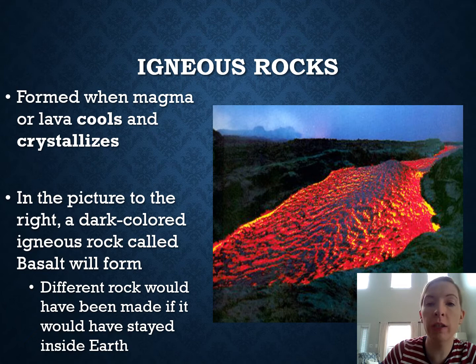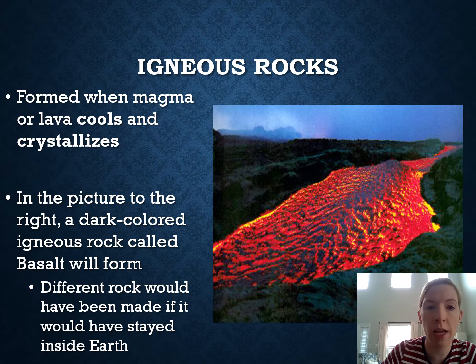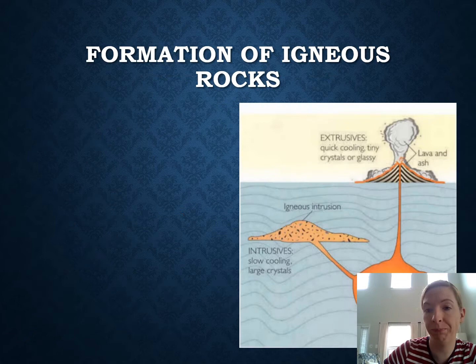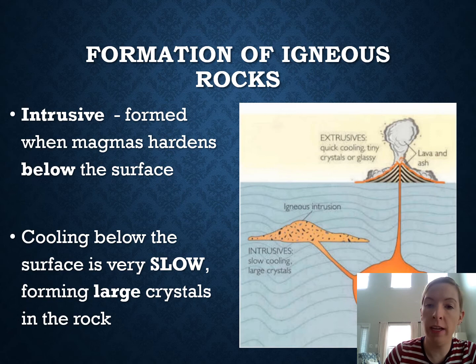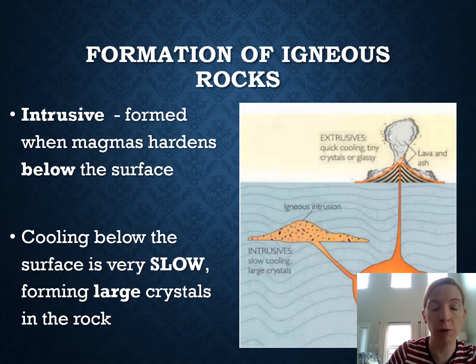Igneous rocks are formed from the cooling and crystallization of magma or lava. Here you can see lava cooling and crystallizing. This is a picture of basalt, a dark-colored rock that is very common and found on the ocean floor. Magma can also cool inside the Earth — in that case we call it an intrusive igneous rock. It cools slowly because the surrounding rock insulates it, allowing crystals to grow larger — large enough to see without any special tools.